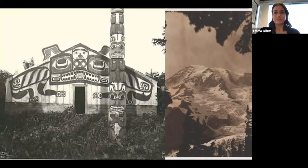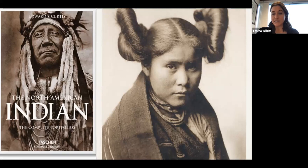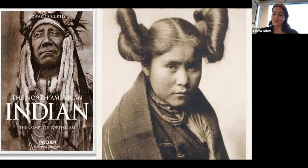Grinnell became very interested in Curtis's photography skills and invited him to join his next expedition — to photograph people of the Blackfoot Confederacy in Montana in 1900. Most famously, in 1906, J.P. Morgan provided Edward Curtis with $75,000 to produce a series on Native Americans — 20 volumes total with over 1,500 photographs. Morgan's funds were dispersed over five years and earmarked only for fieldwork. Curtis received absolutely no salary for this project, which ended up lasting more than 20 years.